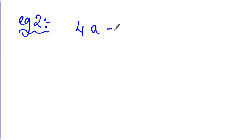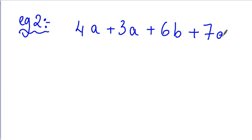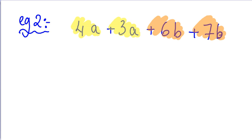Let's move to another example with more terms: 4A plus 3A plus 6B plus 7B. I'm going to ask myself which are the like terms. Clearly, 4A and 3A can be added together, and 6B and 7B can be added together. Following BIDMAS, we do additions first. In this case we only have additions, so it doesn't really matter, but it's still important to recall BIDMAS every time.